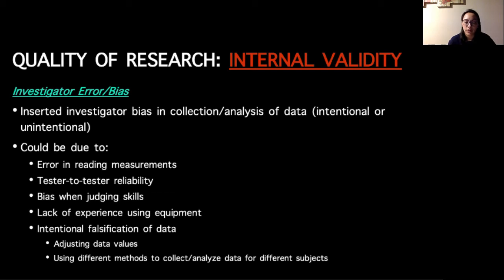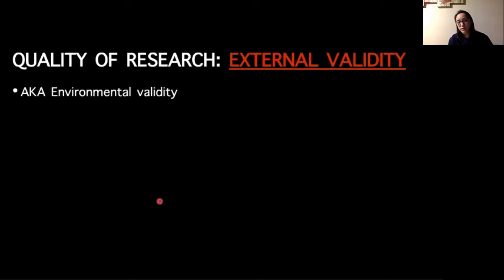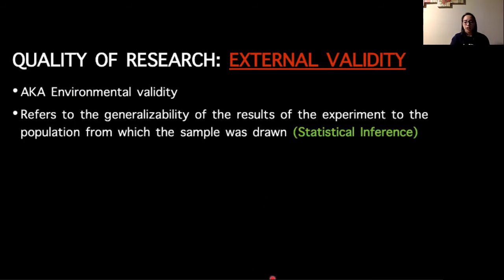So again, internal validity is looking at the characteristics or the soundness of inside the study design. External validity, also referred to as environmental validity, is going to refer to the generalizability of the results. And we have an entire lecture just based on this concept of statistical inference, but what you're trying to do is say, this sample that I've collected from the subset of a population, I do some measurements on them, I analyze the data, and then the results I get from that sample are representative of what I would expect to see in the population of interest.